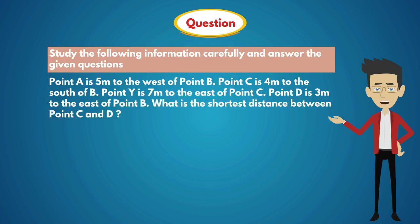Study the following information carefully and answer the given questions. Point A is 5 meters to the west of point B. Point C is 4 meters to the south of B. Point Y is 7 meters to the east of point C. Point D is 3 meters to the east of point B. What is the shortest distance between point C and D?